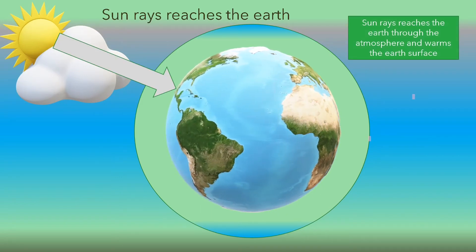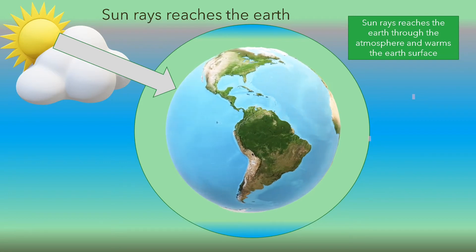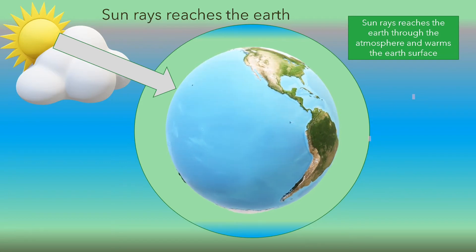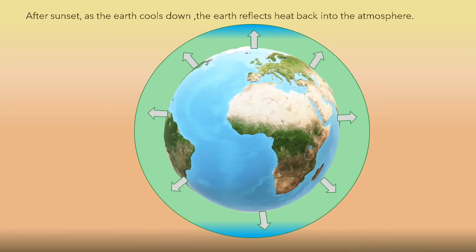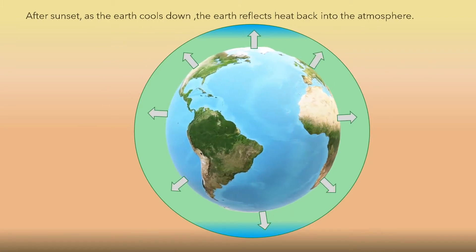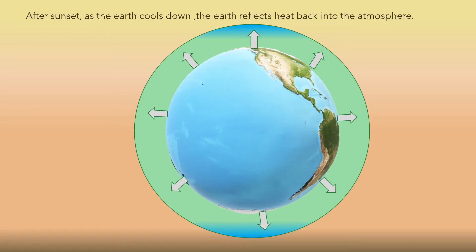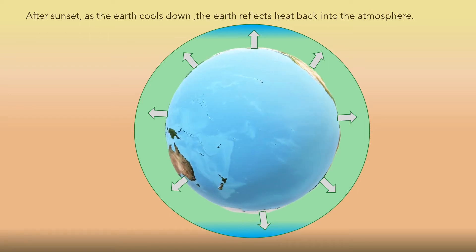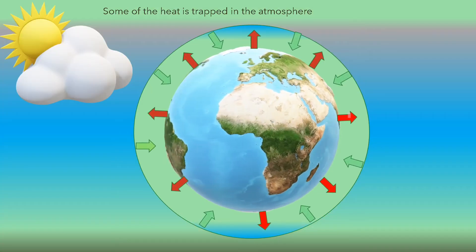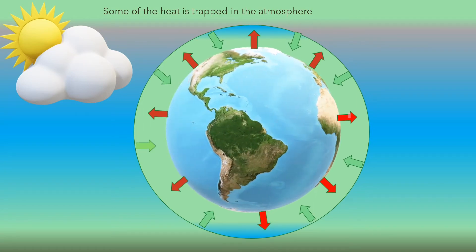Sun rays reach the Earth through the atmosphere and warm the Earth's surface. After sunset, as the Earth cools down, the Earth reflects heat back into the atmosphere. Some of the heat is trapped in the atmosphere.